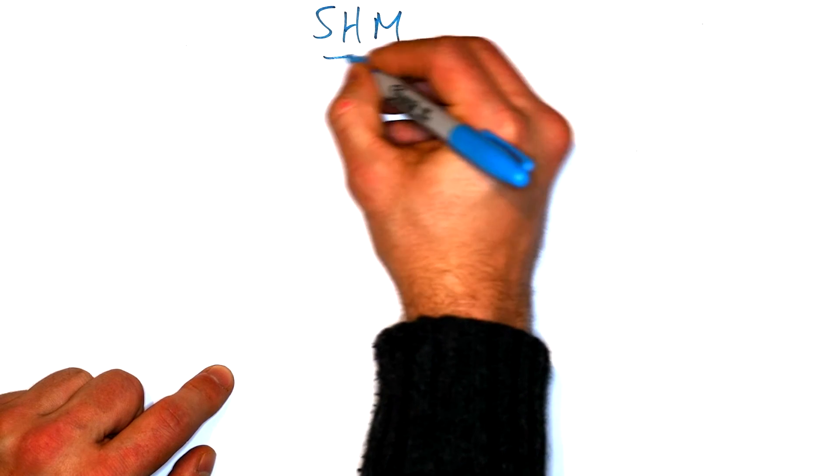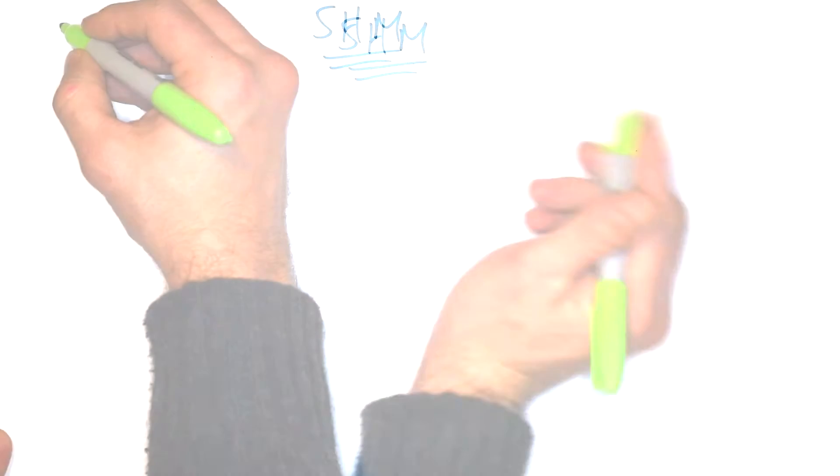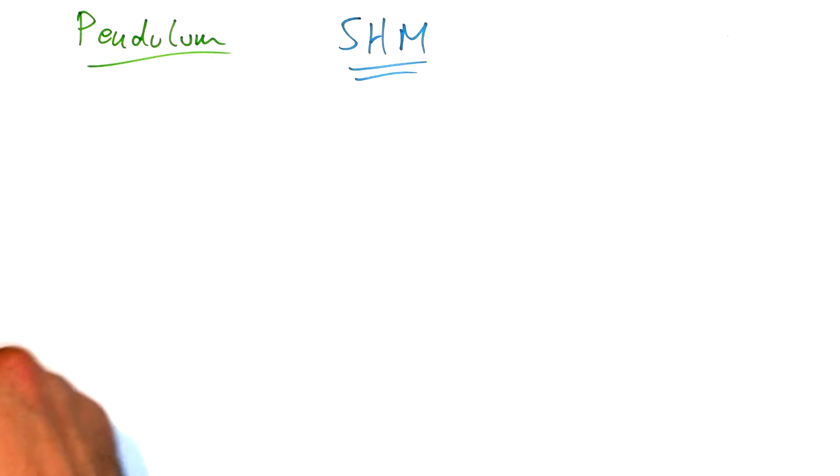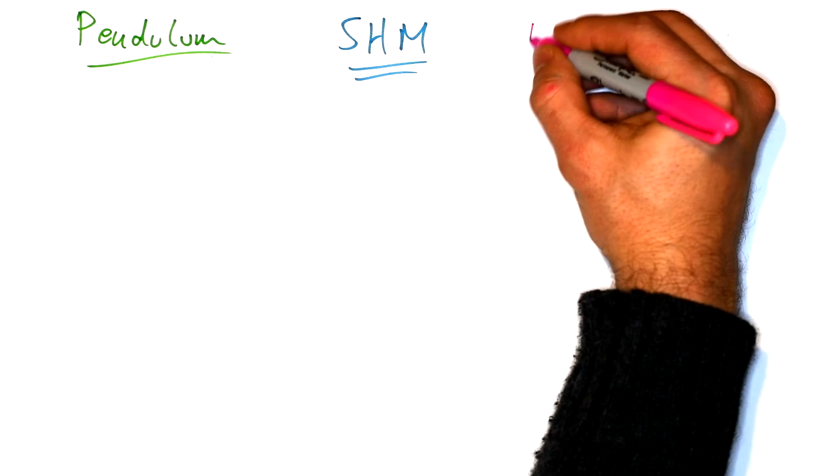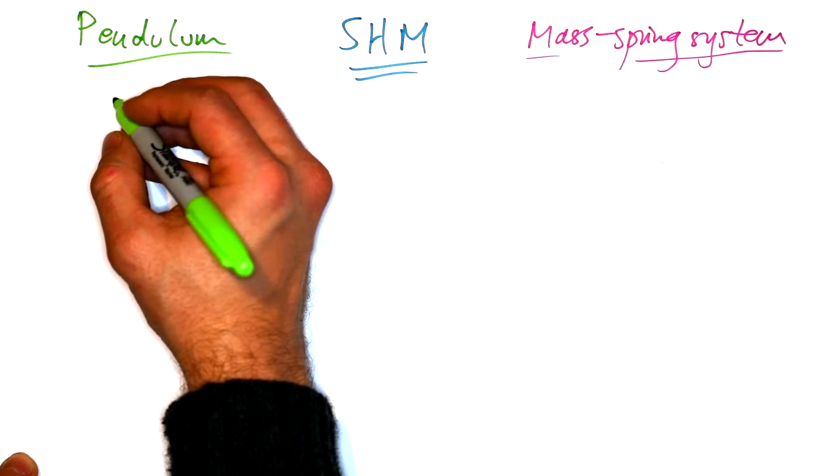All right, this is a two for one today. We're talking about simple harmonic motion, aka SHM. But there's two practicals. We have a pendulum, also known as a simple pendulum, and we have a mass spring system. Very similar equations for both.